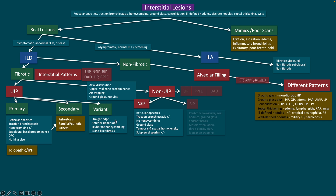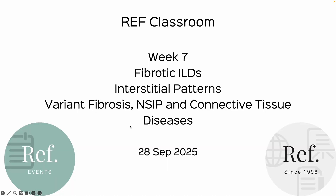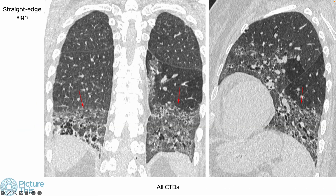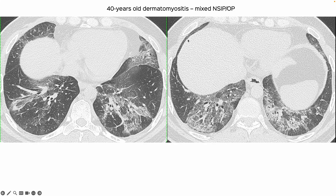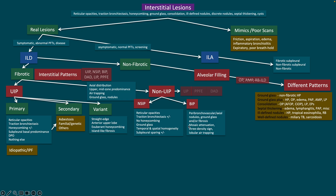What hasn't been fully addressed in the guidelines is variant UIP — where you have a UIP pattern but additional findings suggest connective tissue disease. Non-UIP encompasses five categories. It's easy for guidelines to state classifications, but in practice you still need a mental framework. NSIP and variant UIP come together to give us connective tissue diseases. Week seven covers variant UIP fibrosis, NSIP, and CTD — signs like the straight edge sign, the classic NSIP pattern with subpleural sparing seen in 50% of patients, and the challenge of mixed patterns.